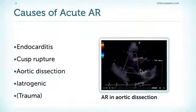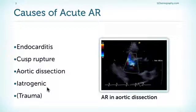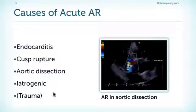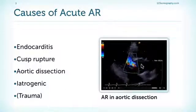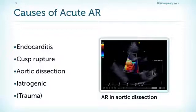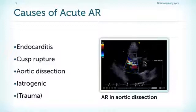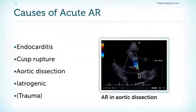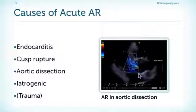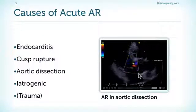Another reason for acute aortic regurgitation is iatrogenic, which is very rare — for example, during a cath study — and trauma. Usually we do not see these trauma patients simply because it usually involves more than the valve and also the aortic root, and these patients usually do not survive to reach the hospital.